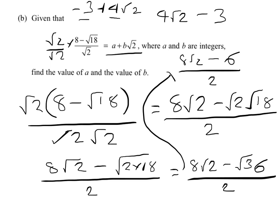We could write that down just to make it clear. Obviously you'll have a bit more room than I have on the exam paper. So A is minus 3 and B is 4. That's the answer to part B.